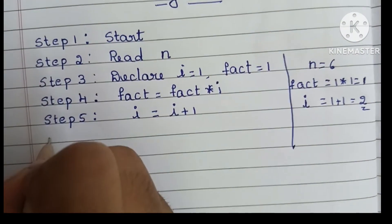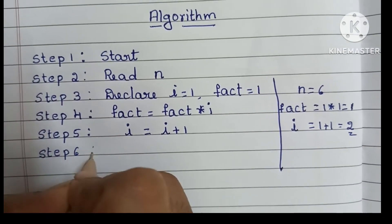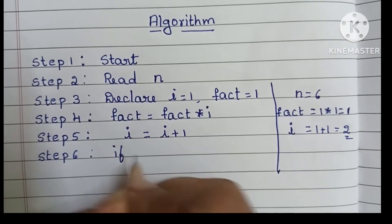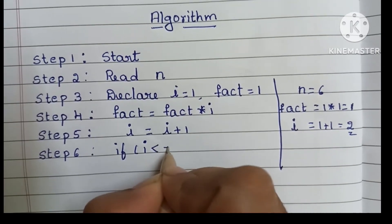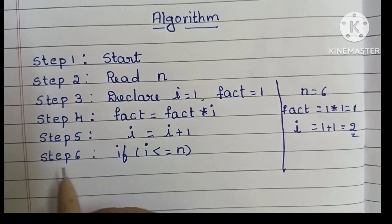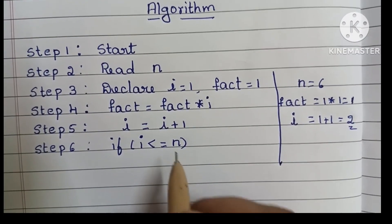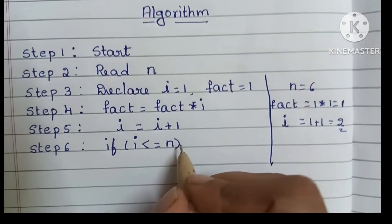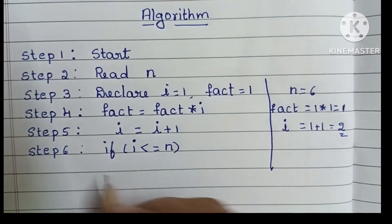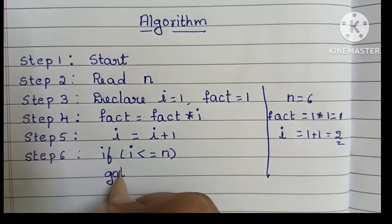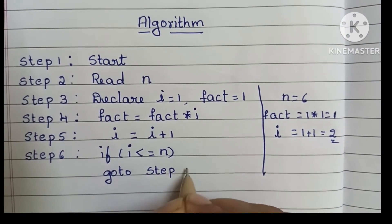In step 6 we have to check if i value is less than or equal to n. If this condition is true, we have to go back to step 4.